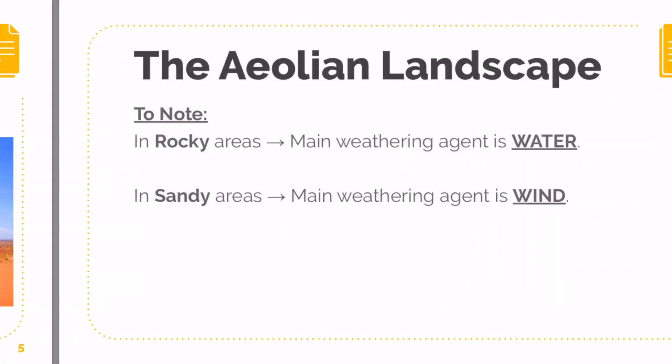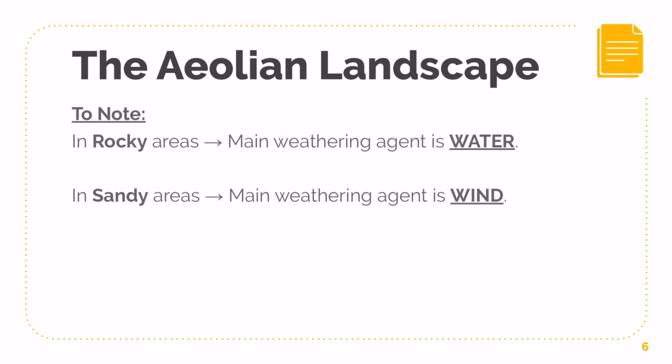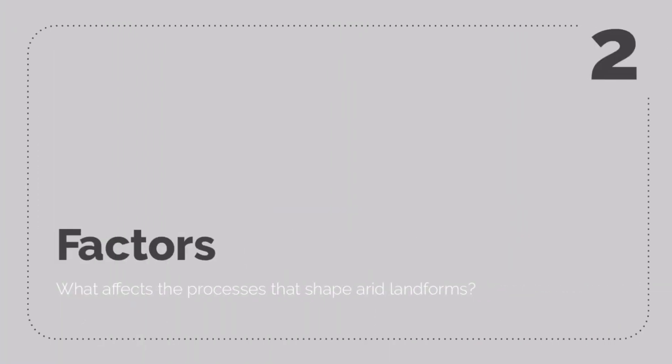Take note that in rocky areas, such as the Hamada, the main eroding agent tends to be water — water erosion is what produces this type of Aeolian Landscape. As for sandy areas, like your sand seas, it tends to be eroded or weathered by wind instead, which we'll go through later on.